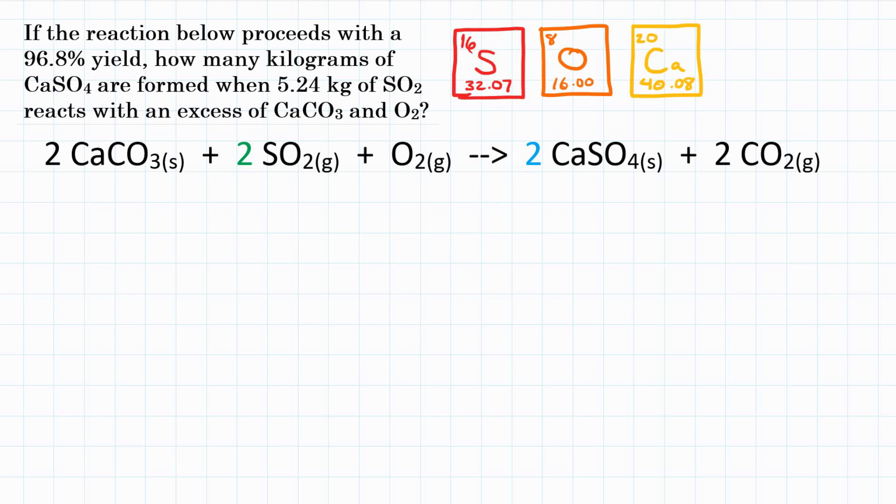So the problem says you have 5.24 kilograms of SO2, how much CaSO4 will you produce in kilograms? So we're dealing with kilograms instead of grams. We could ignore those because they're both units of mass, so the work should stay the same, but we're going to convert those to grams because that's normally what we're dealing with.